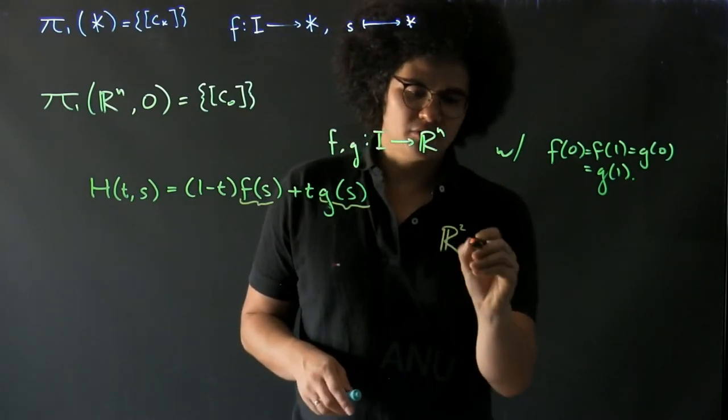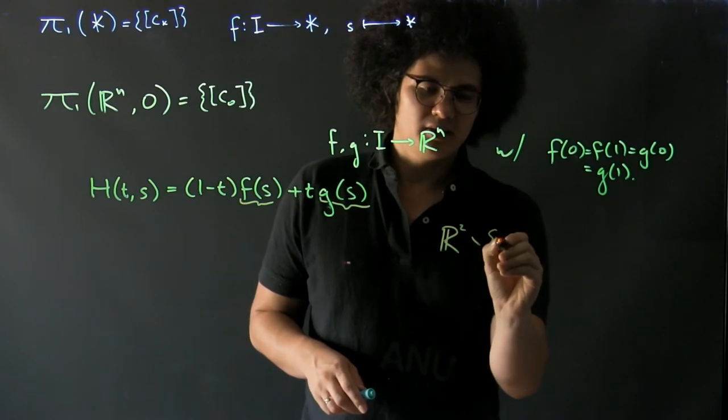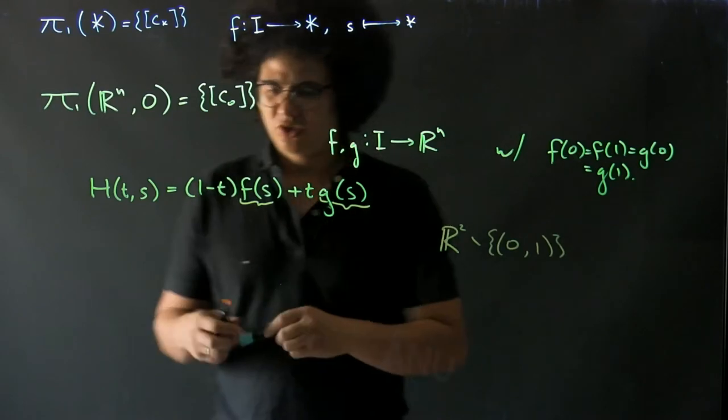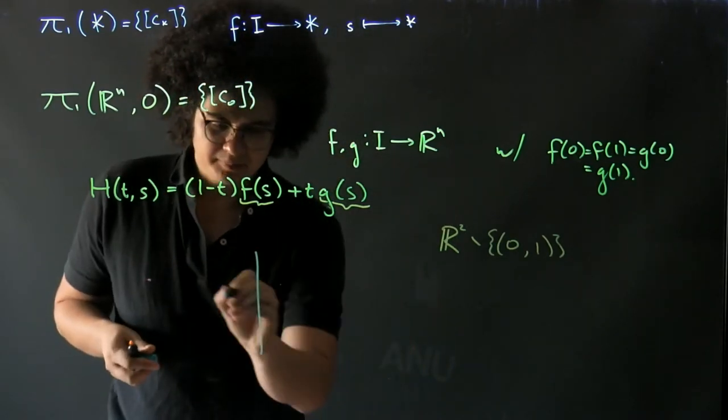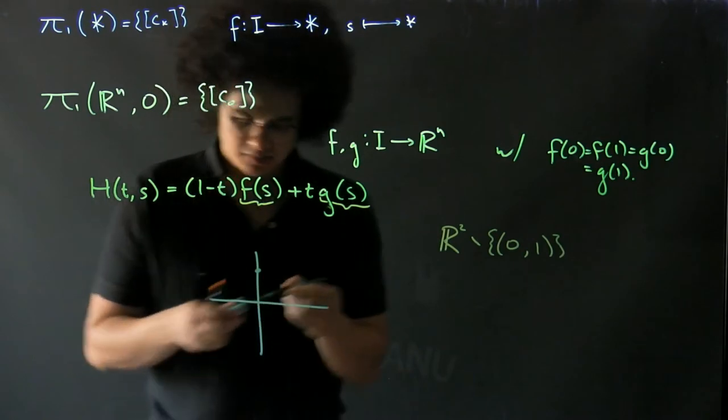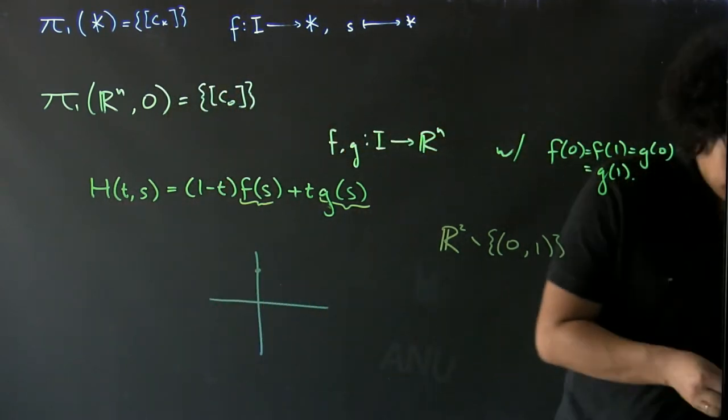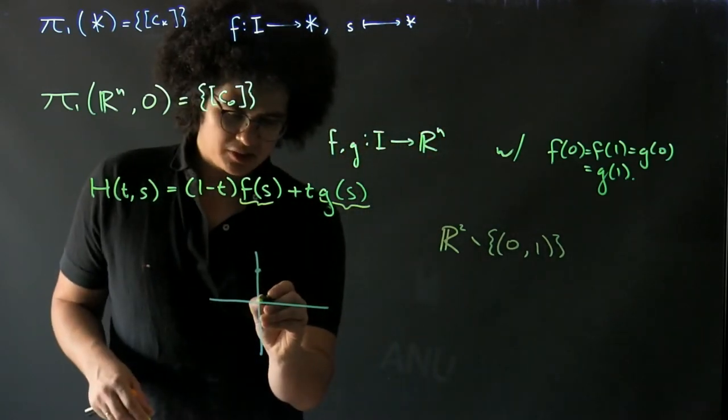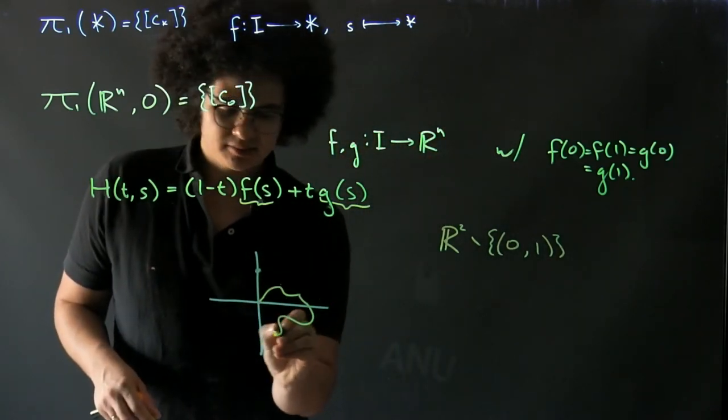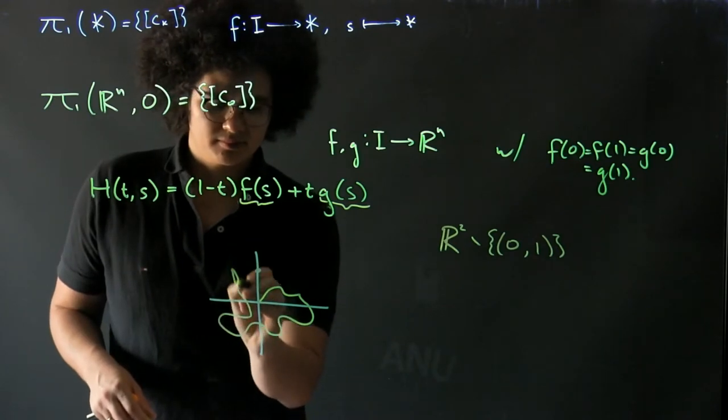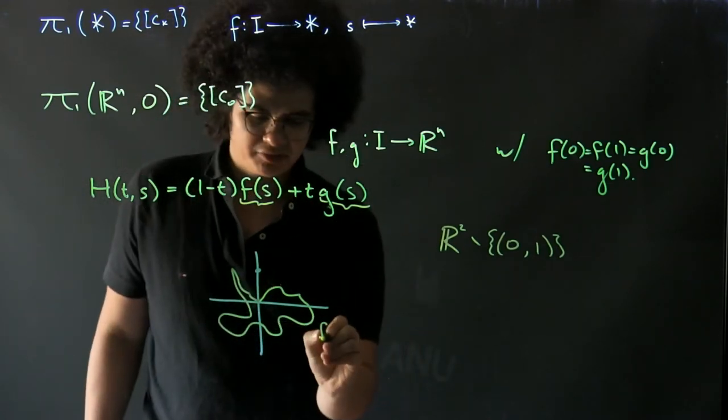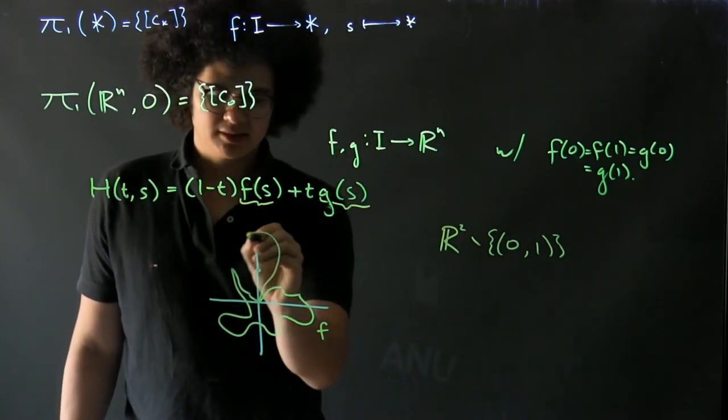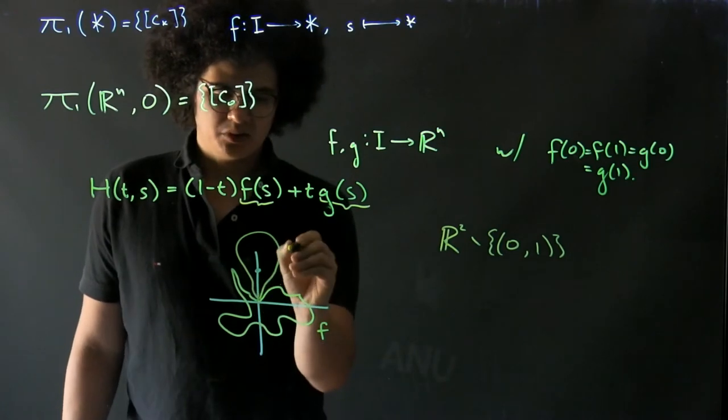Let's consider the case of the Euclidean plane minus the point (0,1). So we have a Euclidean plane, we have the point (0,1) which is missing, and now we might have some loops. I'm going to let one of my loops be like this and call that F, and I'm going to let another one of my loops be like this and call this G.